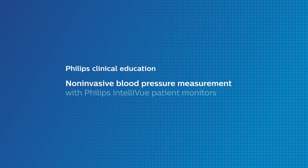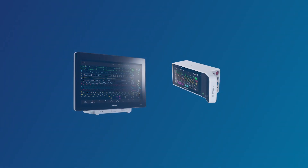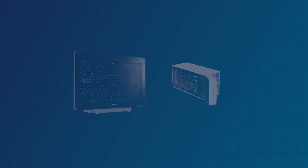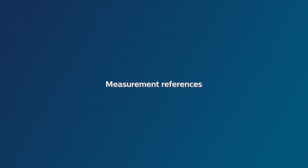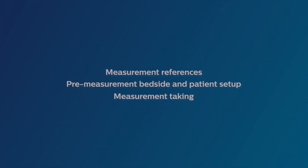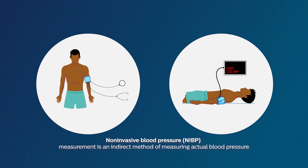This video provides an overview of non-invasive blood pressure measurement using Philips and Teleview patient monitors. It includes information on measurement references, pre-measurement bedside and patient setup, and measurement taking. Non-invasive blood pressure, or NIBP, measurement is an indirect method of measuring actual blood pressure. It's popular because of ease of use and automation.